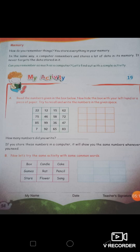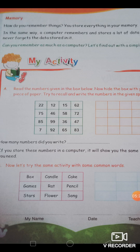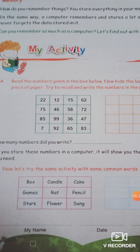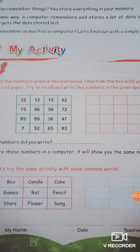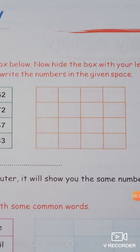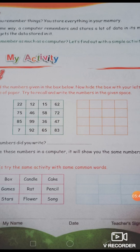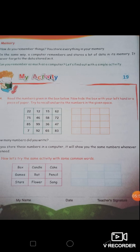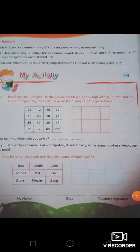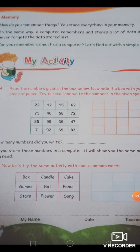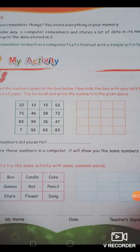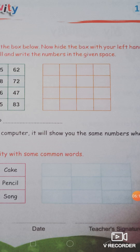Let's do one activity — a memory or remembering task. Some numbers are written in these blocks. First, just read all these numbers. Then hide the blocks with one hand and fill in the numbers in these blank boxes. Then check how many numbers you remembered. Do it honestly. Do the same with these spellings — read all the spellings, hide this block, write in the blank box, and observe how many spellings you could write.